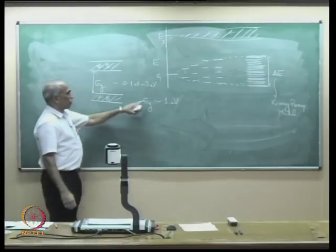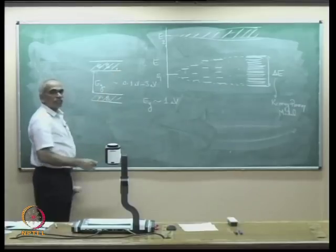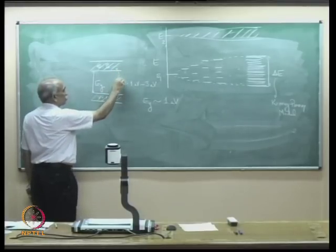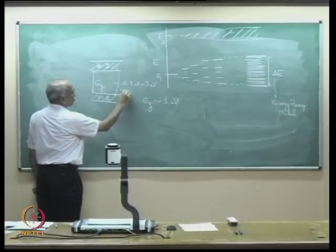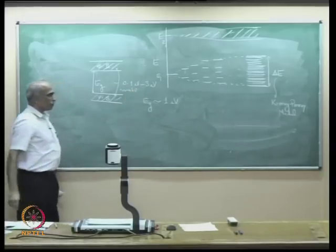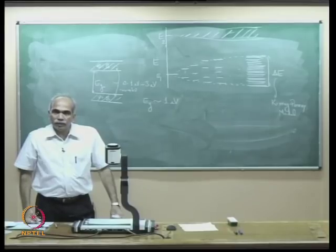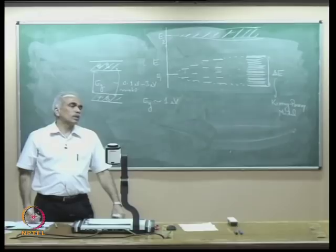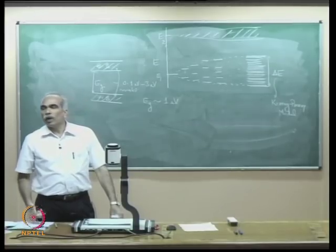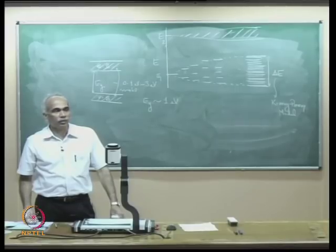Most semiconductors used in optical communication have an Eg of the order of 1 eV ± 1 eV. Electrons in the conduction band combine with holes in the valence band to give out photons. In the next lecture, we will discuss the E-k diagram and see what are direct band gap semiconductors and indirect band gap semiconductors, and why we need direct band gap semiconductors to realize optical sources.